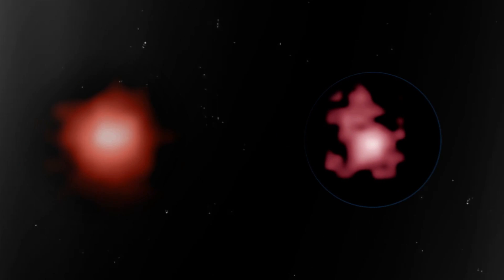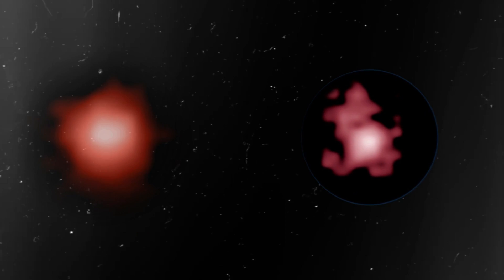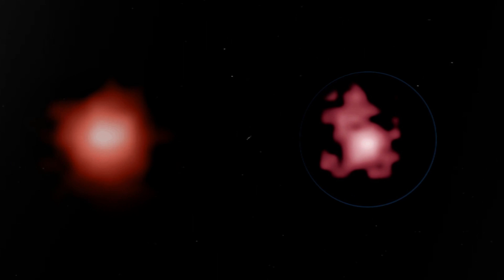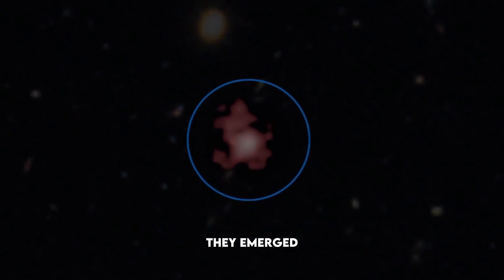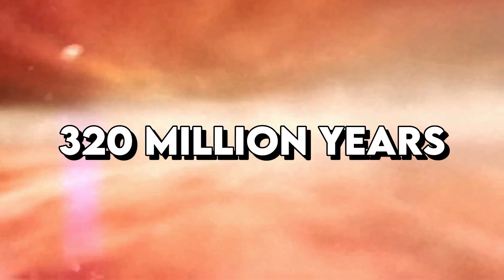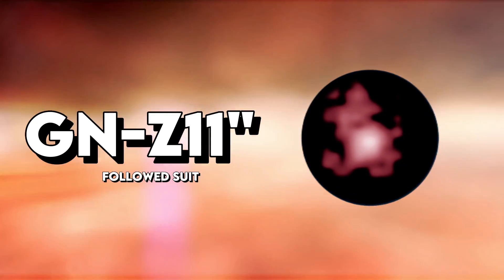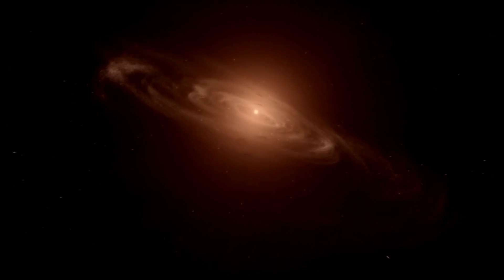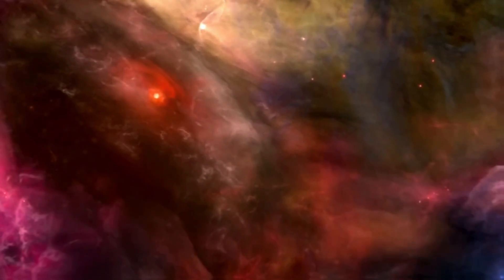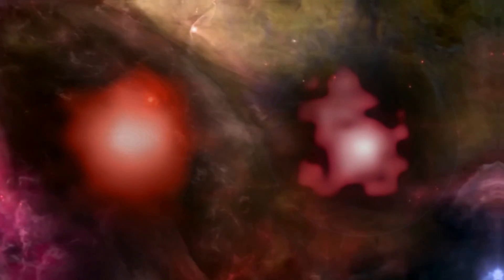Both JADES-GSZ-13-0 and GN-Z11 share a fascinating similarity. They emerged at the dawn of the universe. JADES-GSZ-13-0 took shape a mere 320 million years after the explosive Big Bang, while GN-Z11 followed suit approximately 400 million years later. This remarkable alignment allows us to peer through an extraordinary window into the very origins and evolution of our universe. Prepare to be captivated by these cosmic time capsules.